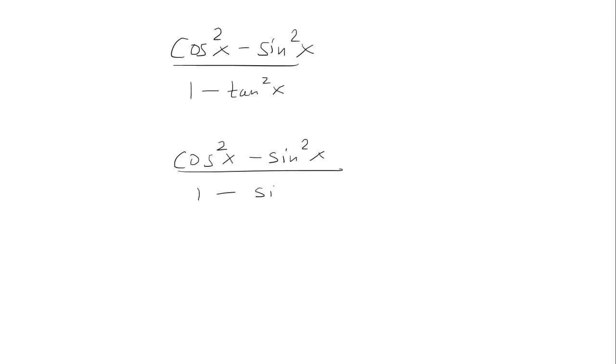So that's going to be 1 minus sine squared over cosine squared in the denominator. The next step is to multiply the top and bottom by cosine squared.